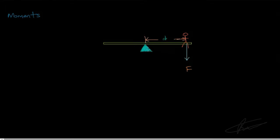To recap: we have an object resting on a pivot. Someone sits at some distance d from the pivot, and the object experiences a turning effect — that's what we refer to as the moment. The moment, given the symbol T, is simply equal to the force multiplied by the perpendicular distance d.